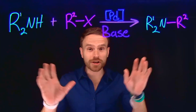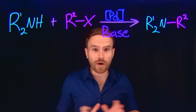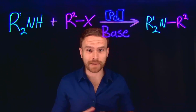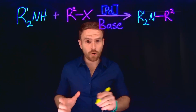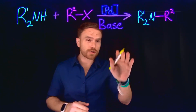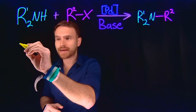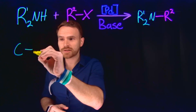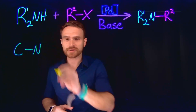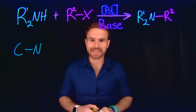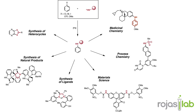This cross-coupling reaction revolutionized the way that we make arylamines. At its core, the Buchwald-Hartwig amination is a way to make carbon-nitrogen bonds using palladium catalysis. Arylamines are incredibly important for drug synthesis, agrochemicals, and even materials.